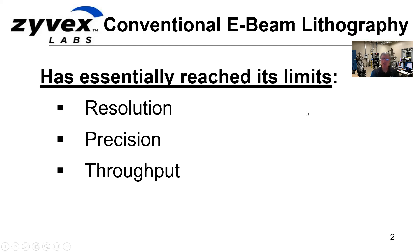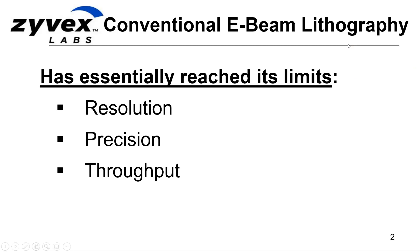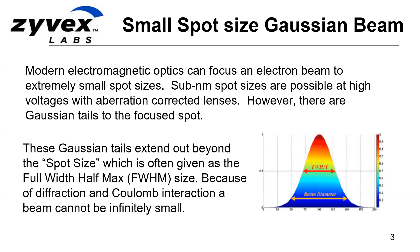We must admit that e-beam lithography, much like Moore's Law, has reached its limits to a large extent. Some improvement is still possible, but the dramatic improvements are gone — it's really reached its limits in resolution, precision, and throughput. There is some significant success with multi e-beam tools these days, but a quarter of a million beamlets only gets you about a factor of 10 improvement in throughput. So no dramatic gains in throughput on conventional e-beam.